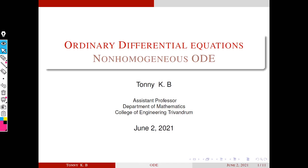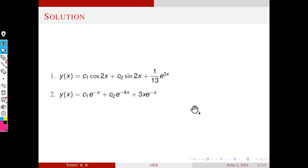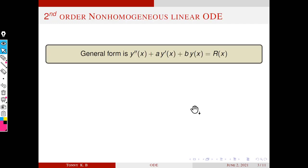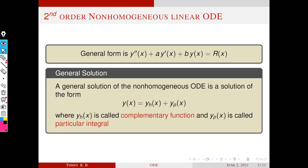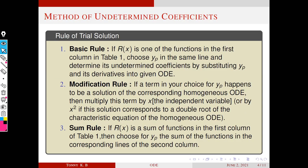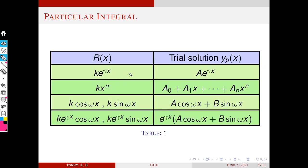Namaskaram. Today we will continue the problems related to non-homogeneous ODE. These are the solutions of last homework. In the previous session we have seen what is the non-homogeneous linear ODE and what about the general solution. It is a sum of two functions: complementary function plus particular integral. We also saw the method of undetermined coefficients and the basic rules for selecting the trial solution. We also solved two problems related to these two rules.